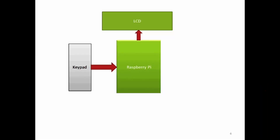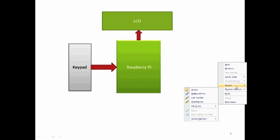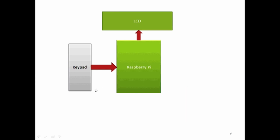In this new video, we will interface two different hardware with the Raspberry Pi board. In my previous videos, I have already discussed how to interface a keypad with Raspberry Pi and an LCD with Raspberry Pi. This time, we will use these two hardware pieces and make a small project called Password Protection System.